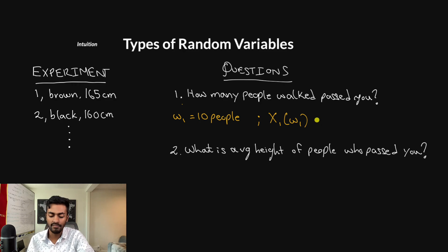And it will now give us some value, some measurable value. And in this case, well, since 10 people passed us, we're going to map it to the integer value 10. Now, let's do the same for the second question, what is the average height of people who passed you. I'm going to represent the outcome of this as omega two, and let's say that it was 165.32 centimeters.